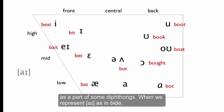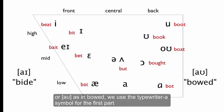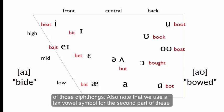When we represent I as in bide, or ow as in bowed, we use the typewriter A symbol for the first part of these diphthongs. Also note that we use a lax vowel symbol for the second part of these diphthongs.